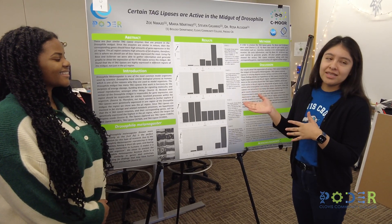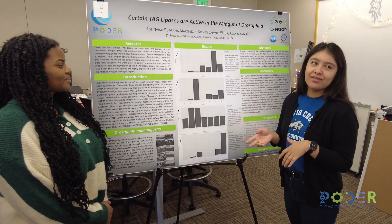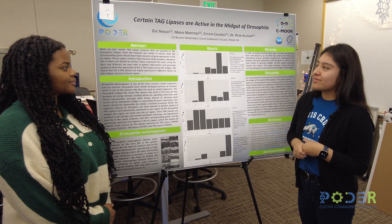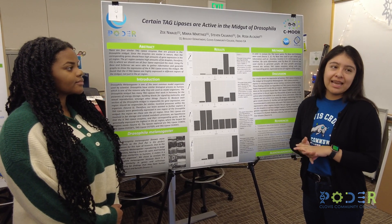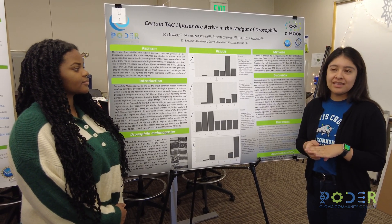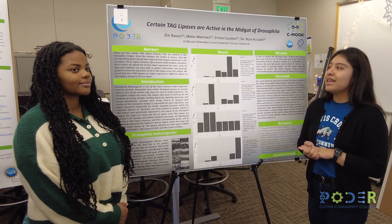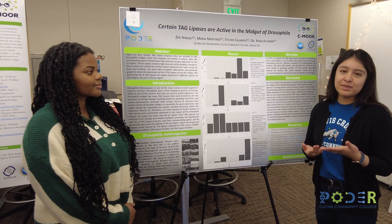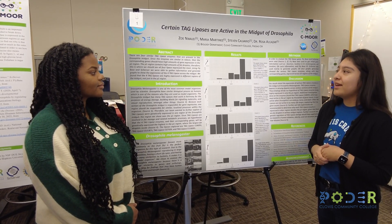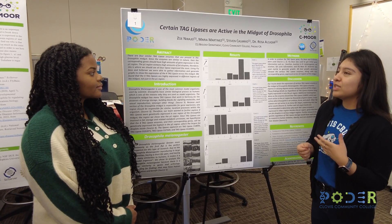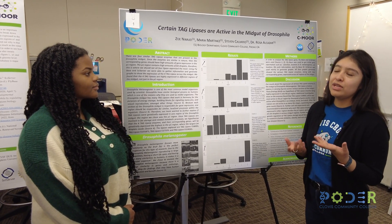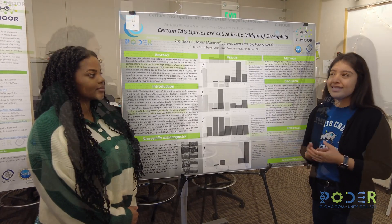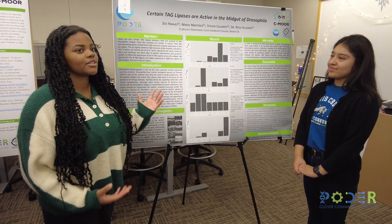Our model organism that we studied is the midgut, and we found that there are four different taglicase genes present in the midgut. Since they're similar in nature, we thought they would be highly expressed in the same region. So our question was: which region would all four ligases be highly expressed in?